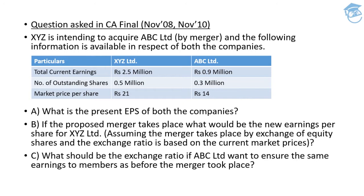Next comes the number of outstanding shares — for XYZ Limited it's 0.5 million, for ABC Limited it's 0.3 million. Apart from that, we have also been provided the market price per share — for XYZ Limited it's 21 rupees, and for ABC Limited that's 14 rupees.